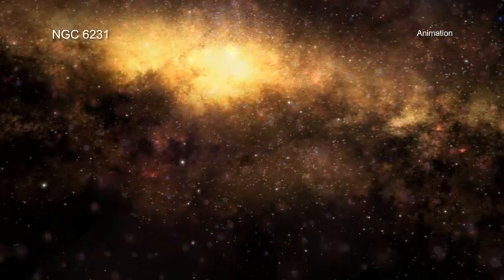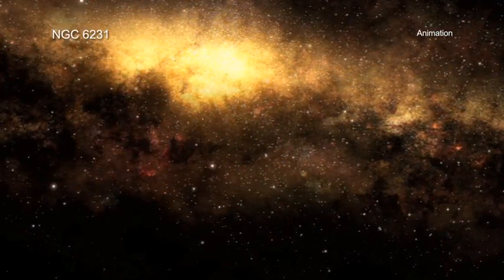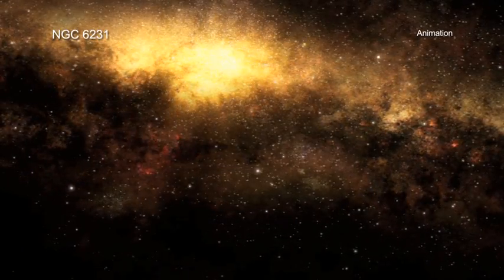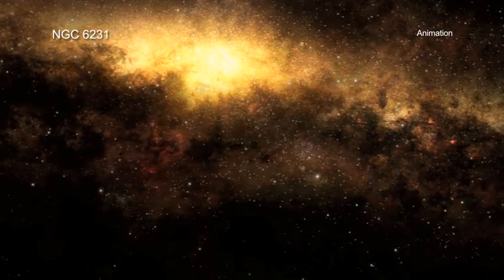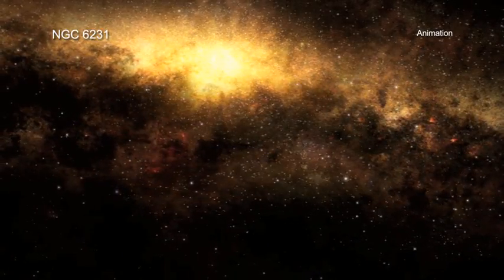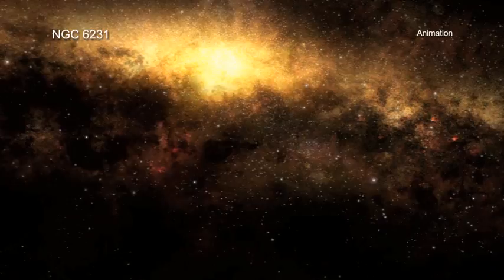Young star clusters like NGC 6231 are found in the band of the Milky Way on the sky. As a result, interloping stars lying in front of or behind NGC 6231 greatly outnumber the stars in the cluster.